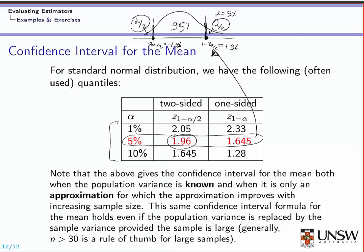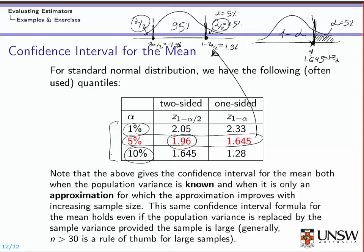For the one-sided scenario, you cut off the entire alpha on only one tail of the distribution, so this corresponds to 5% rather than 2.5% as in the two-sided scenario. You still have 1 minus alpha on the left-hand side of the distribution, but the quantile value changes and now corresponds to 1.645. The other two values for alpha corresponding to 1% and 10% are also useful, but you do not have to memorize them.